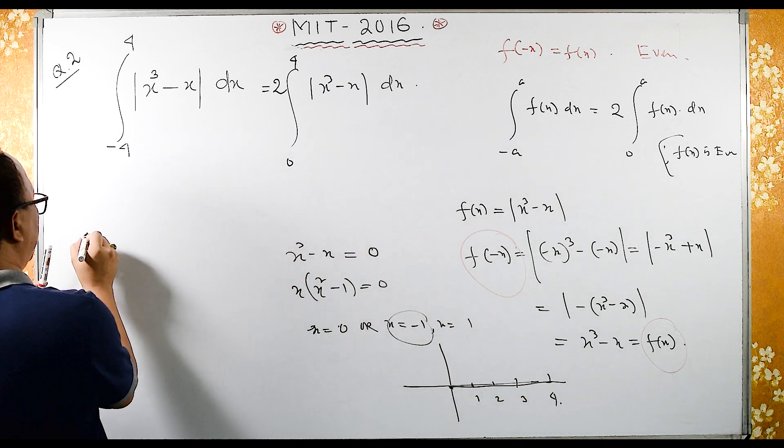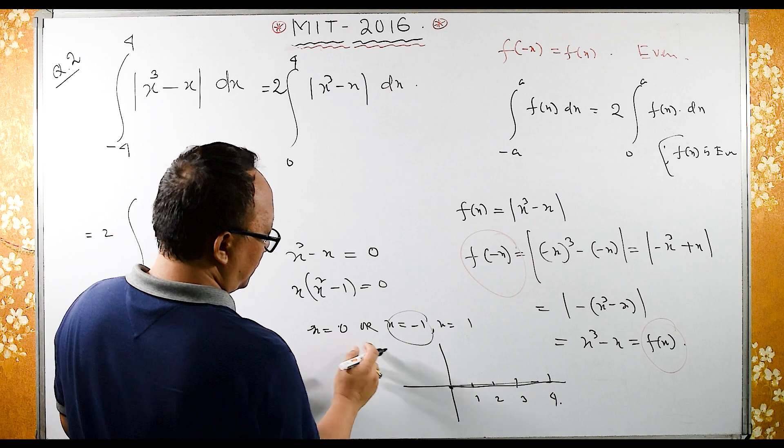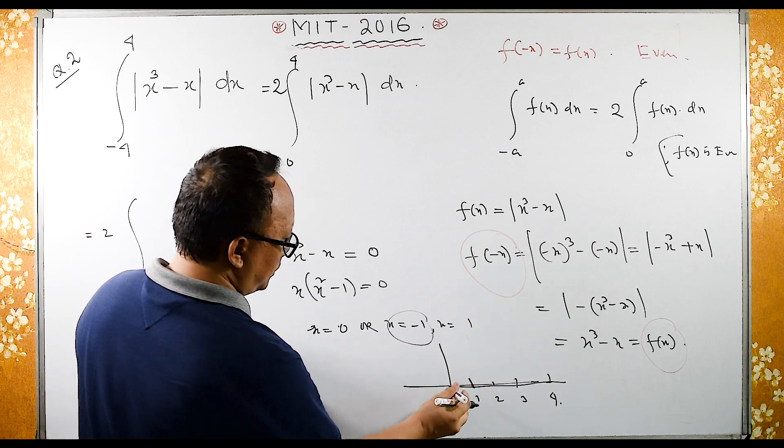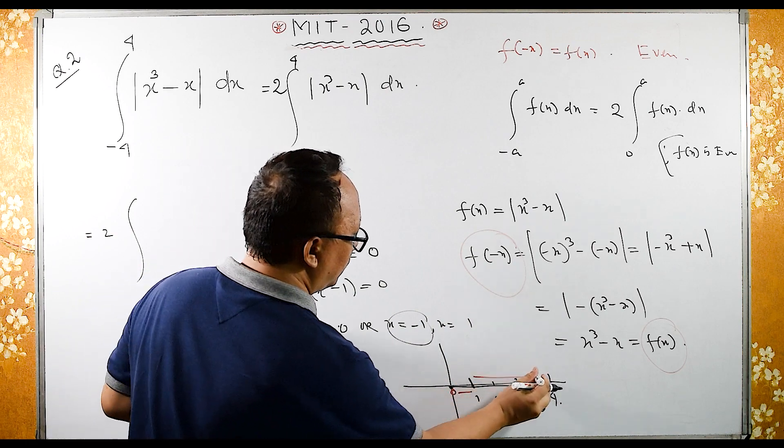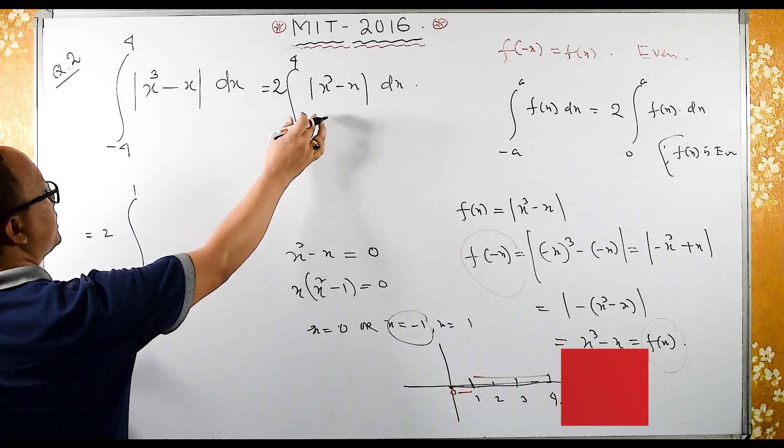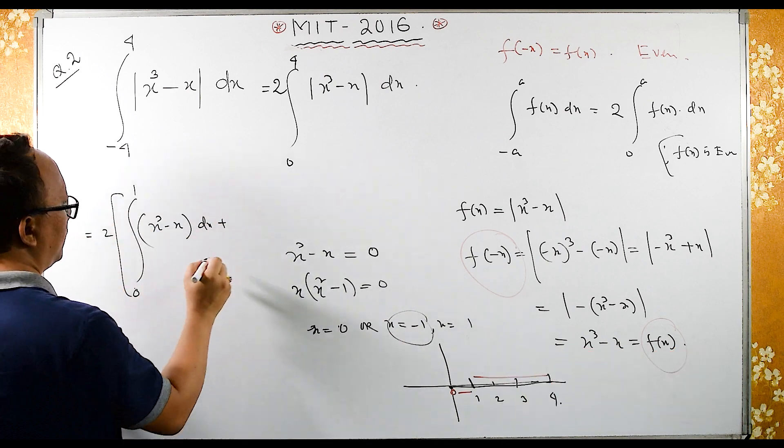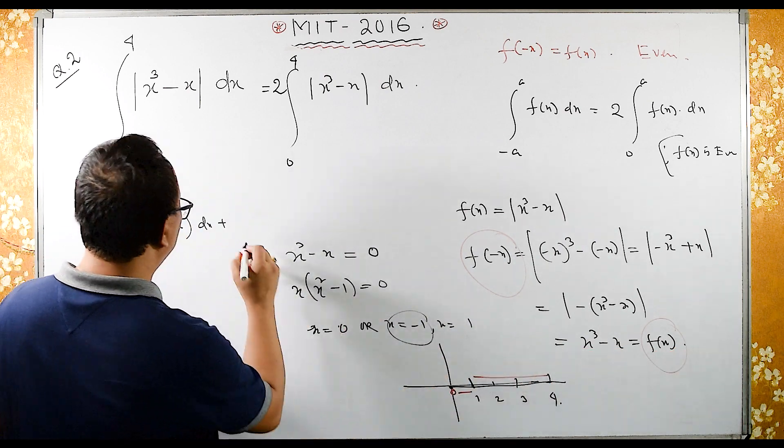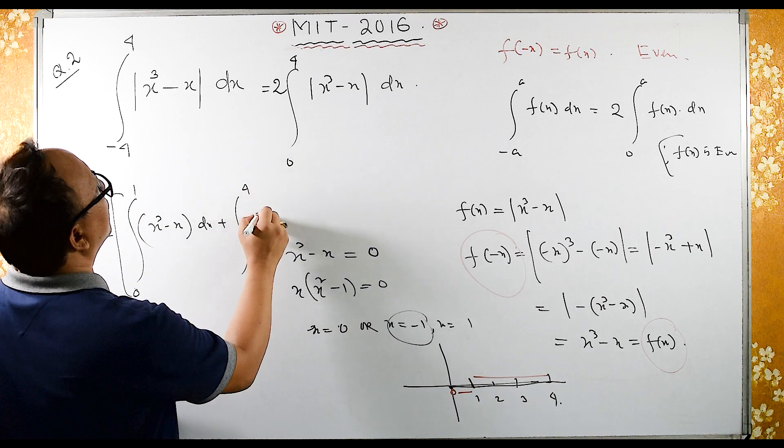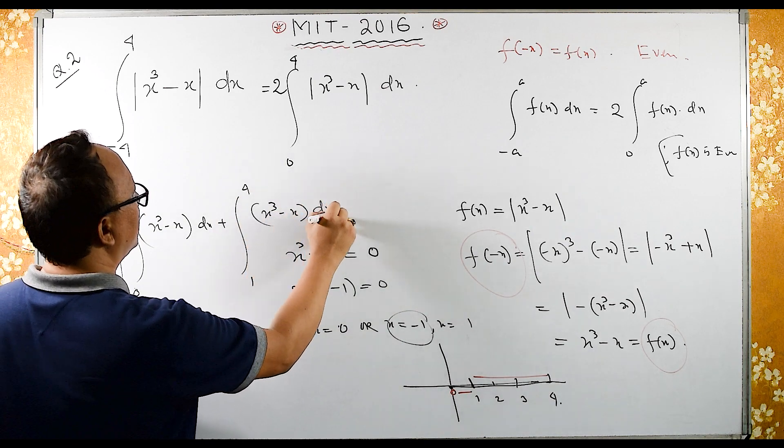Therefore this is same as twice, I can say twice 0 to 1 and 1 to 4. So 0 to 1, this x cube minus x dx, plus and then 0 to 1 and 1 to 4, here 1 to 4 we have x cube minus x into dx.